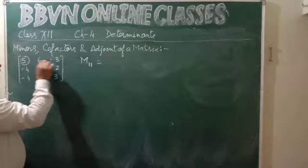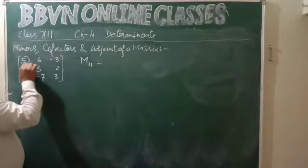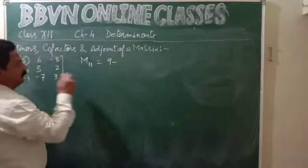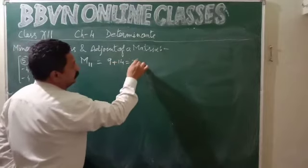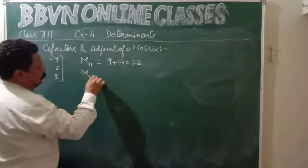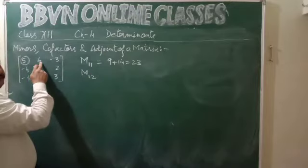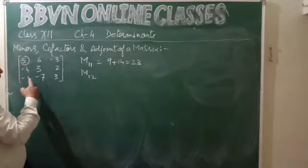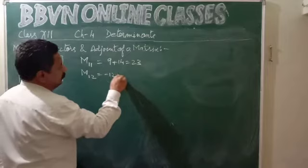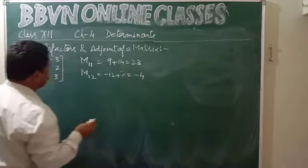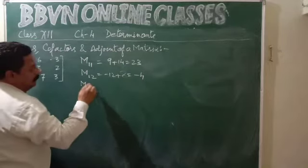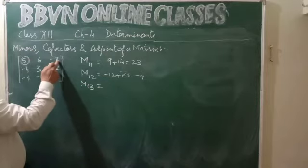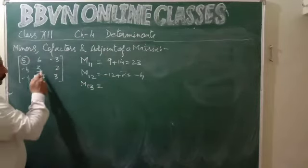To find M11, leave this row and column, then cross multiply: 9 minus minus 14, which gives plus 14, so M11 is 23. For M12, first row second column, we are finding the minor of element 6 — leave this row and this column: minus 12 plus 8 gives minus 4. For M13, first row third column, we are finding the minor of minus 3 — leave this row and this column: 28 plus 12.